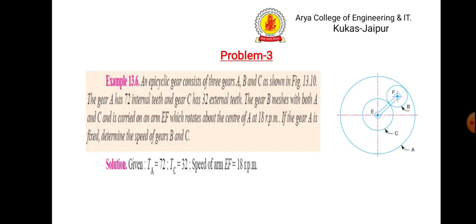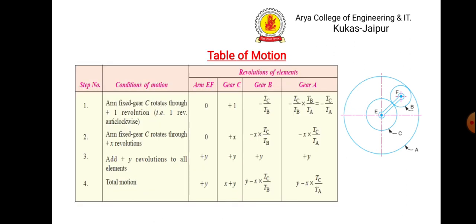Let us take one problem. An epicyclic gear consists of three gears a, b, and c as shown in the figure. Gear a has 72 internal teeth and gear c has 32 external teeth. Gear b meshes with both a and c and is carried on an arm ef which rotates about the center of a at 18 rpm. If gear a is fixed, determine the speed of gears b and c.